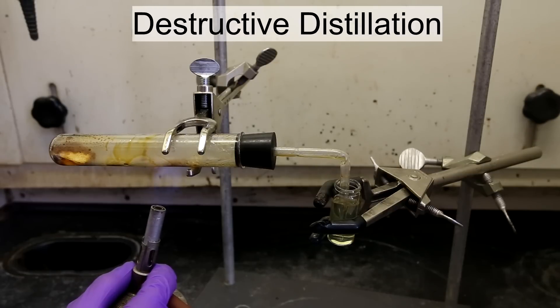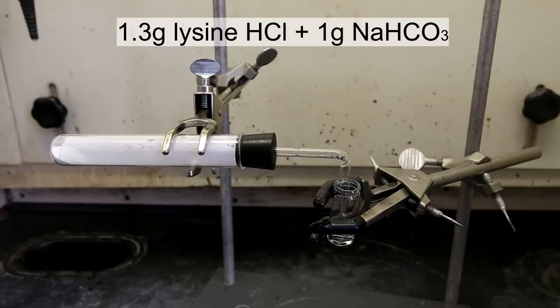Next is the destructive distillation method, which is a much more efficient process. This is an improvised destructive distillation setup that I made. For this run I used 1.3 grams of lysine and about 1 gram of sodium bicarbonate.